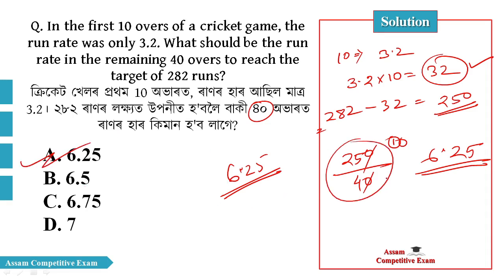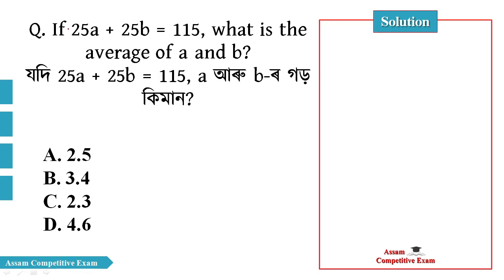So your answer is 6.25. Next question: If 25a plus 25b is equal to 115, what is the average of a and b? So, 25a plus 25b equals 115. I will solve this one.